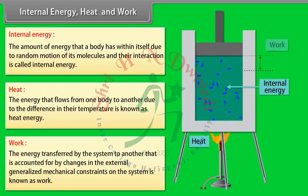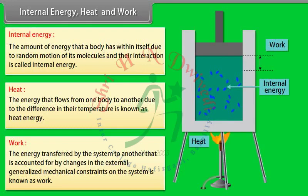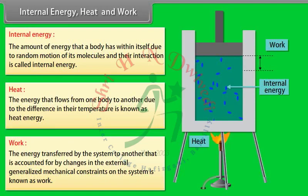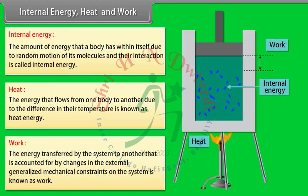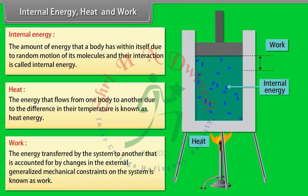Consider a gas kept in a container with a piston mounted at the top. The container is heated from the bottom. Gas molecules are in random motion due to their internal energy. Heat energy given to the gas raises its temperature and the molecules expand, covering a larger volume. This displacement is the work done.